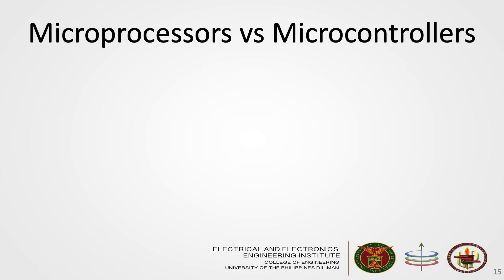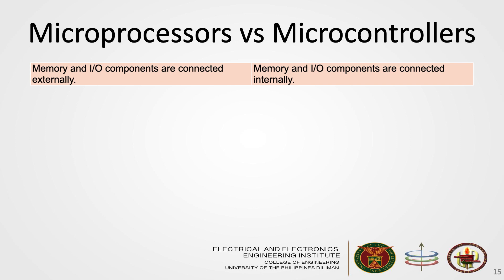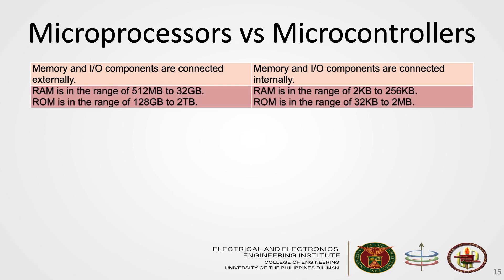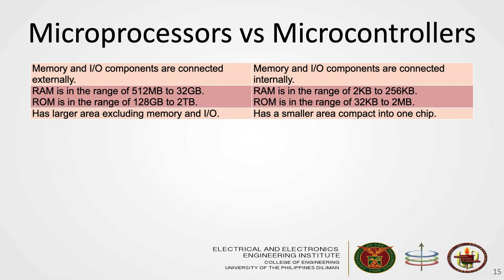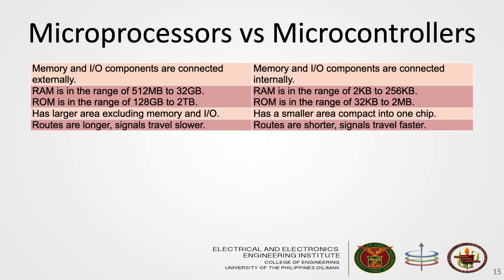Microcontrollers are different from processors or microprocessors in many ways. In microprocessors, memory and IO components are connected externally, while they are connected internally in microcontrollers. Microprocessors typically have a RAM of 512 megabytes to 32 gigabytes and a ROM of 128 gigabytes to 2 terabytes, while microcontrollers have a RAM of 2 kilobytes to 256 kilobytes and a ROM of 32 kilobytes to 2 megabytes. Microprocessors have a larger area excluding memory and IO, while in microcontrollers everything is compact in one small chip. Since other blocks are external, microprocessors have longer routes, so signals travel slower, while microcontrollers have shorter routes, so signals travel faster.